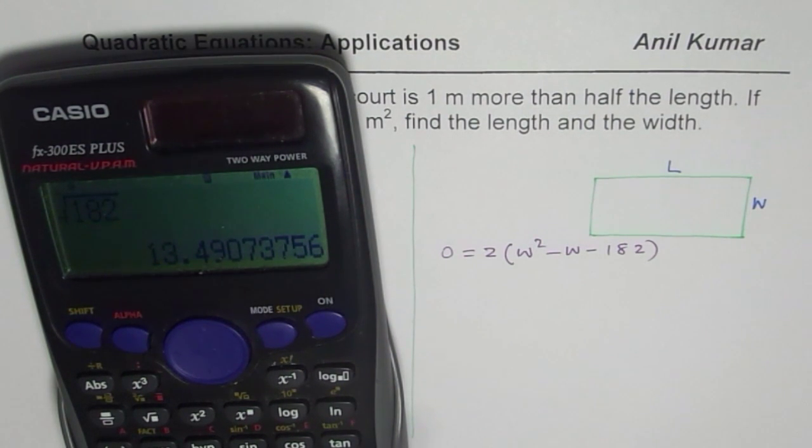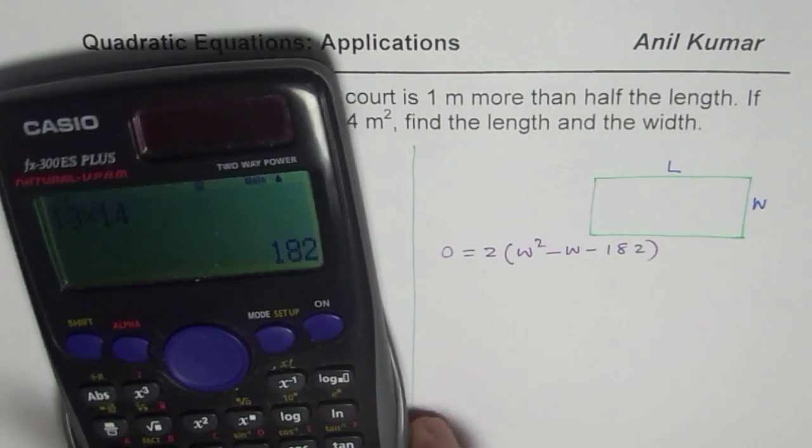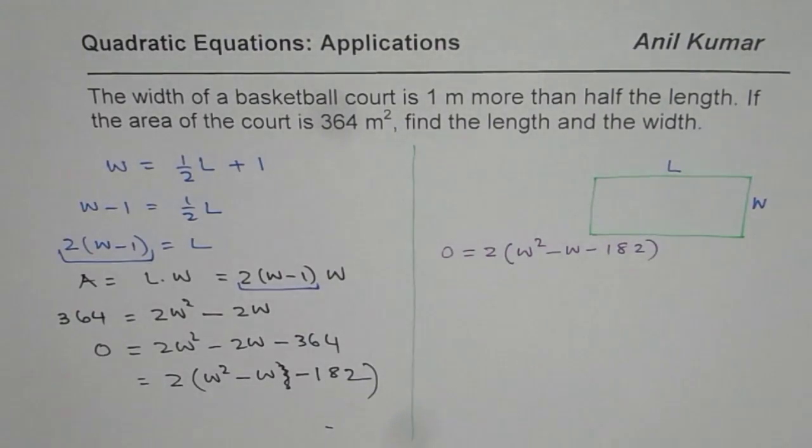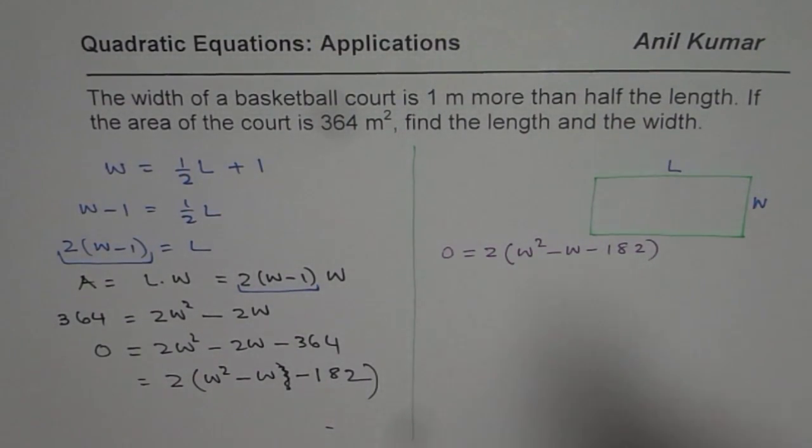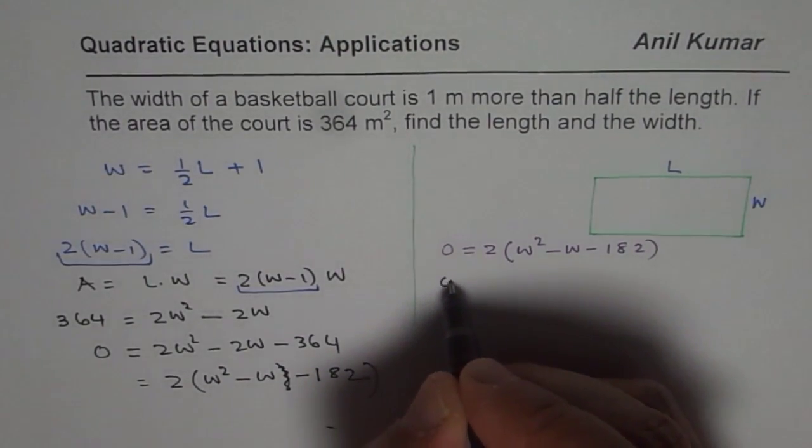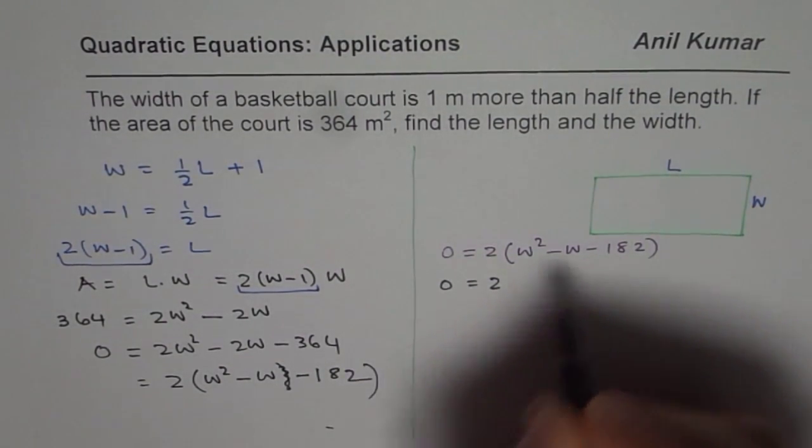So their difference is 1. So let us try. 13 times 14 is what? 182. So that works. So whenever there is just one difference, you can do square root and then factor. That is an excellent technique. So we found that 13 and 14 work for us.